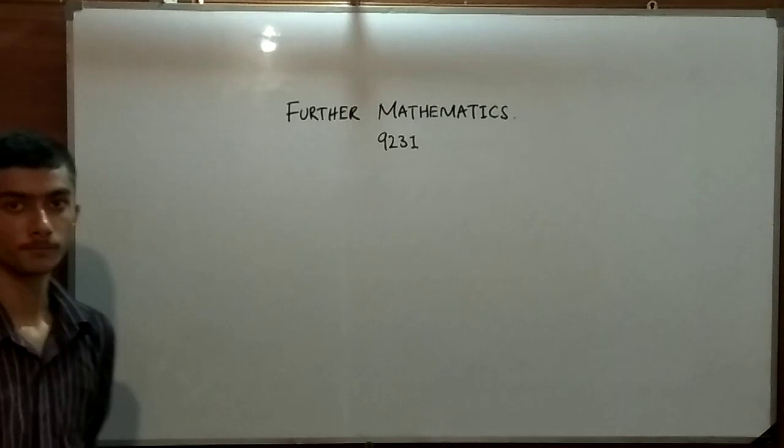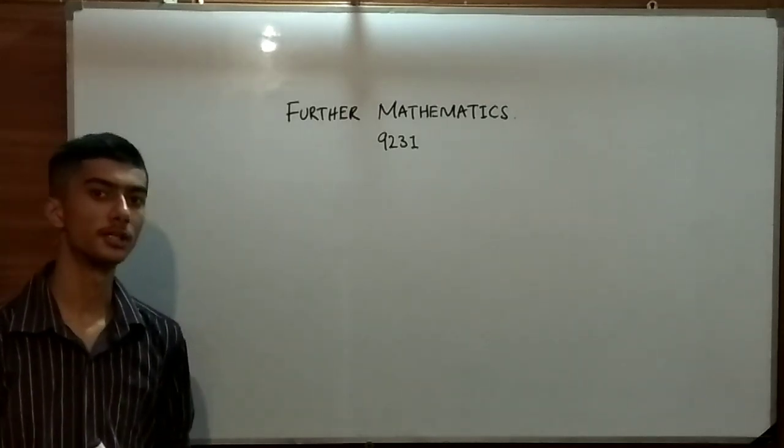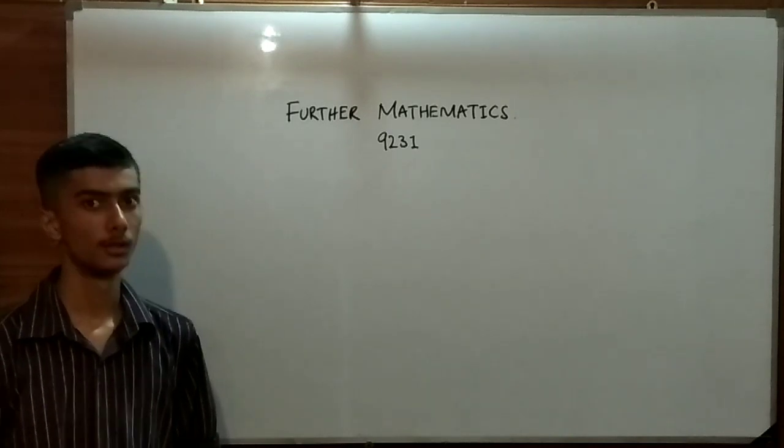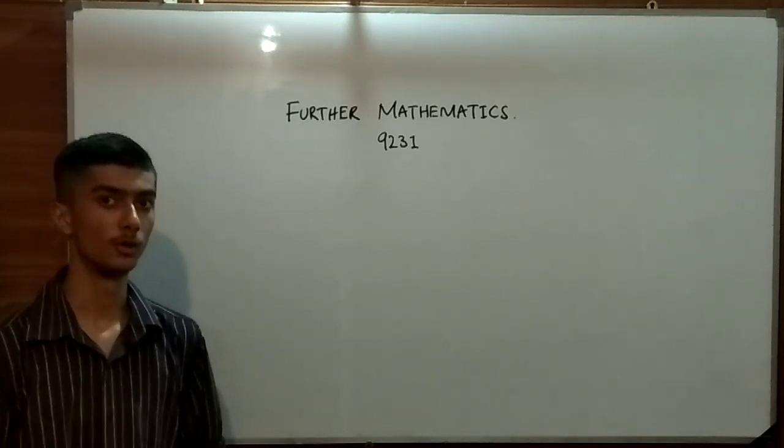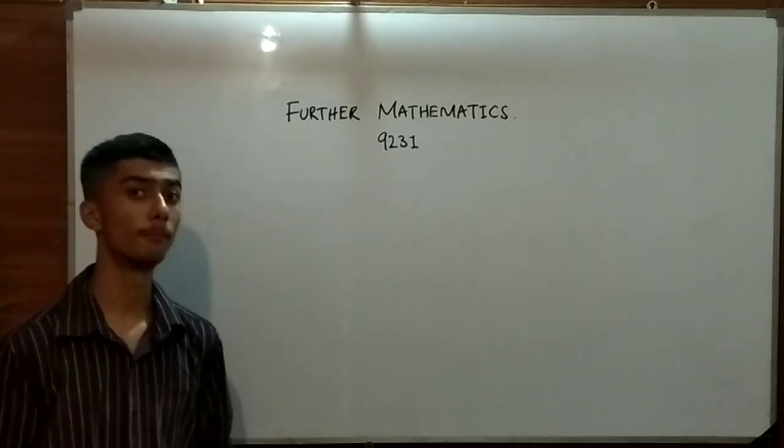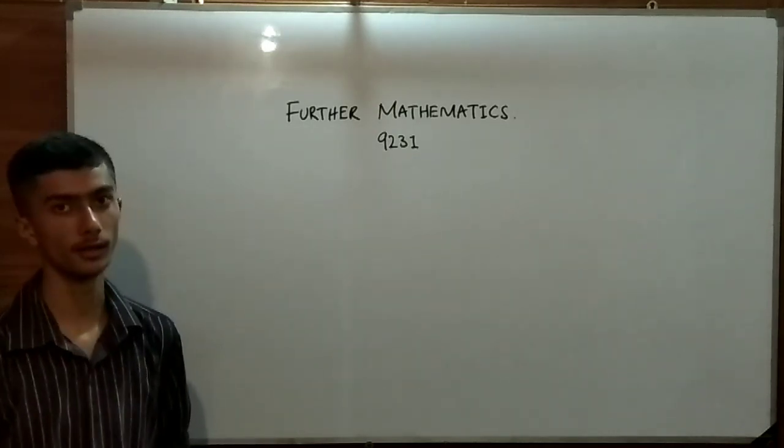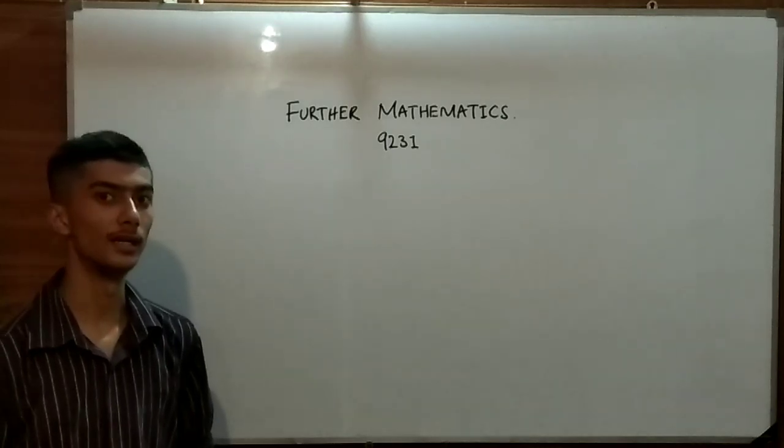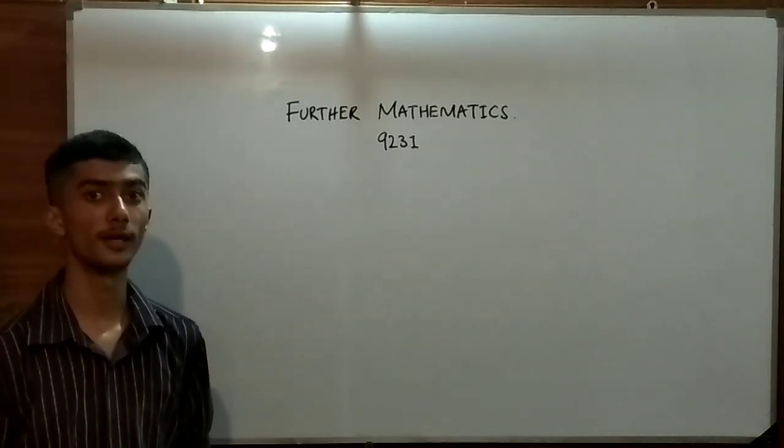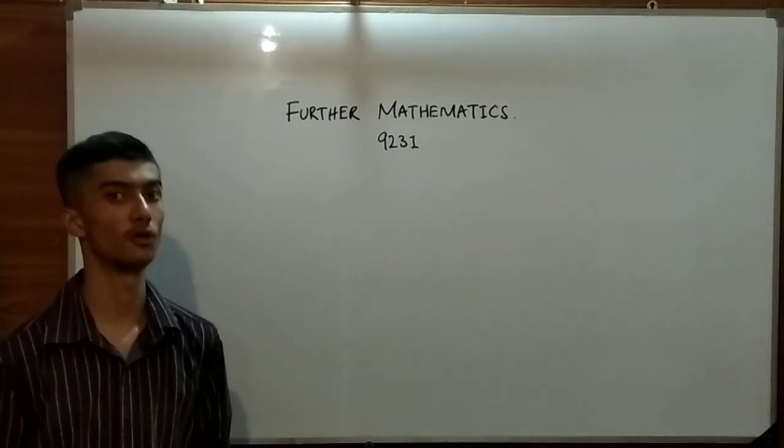First of all it is very much understood that further mathematics can only be obtained in A-levels. You don't have any option if you just not completed your whole A-level maths that is 9709 which is comprised of at least 4 components and P3. P3 is a component that is mandatory for completing your A-levels.